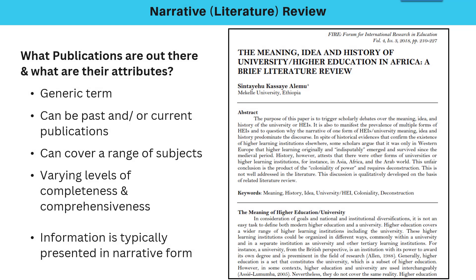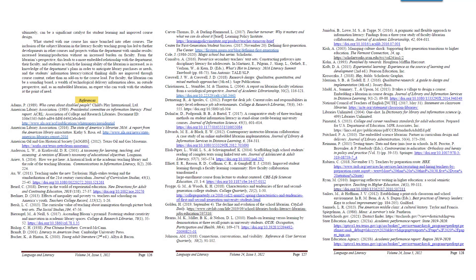A literature review used in the narrative style can present what publications are out there and what their attributes are. This is typically what we think of when doing one that's part of a paper — it will discuss the items of research that inform the study being discussed in the rest of the paper. It's up to the author what to include and exclude, and it can cover a large topic, a huge range of subjects, or even a wide range of time. In this example, the authors looked at publications from 2004 to current research, because these were the specific items that informed their study design.